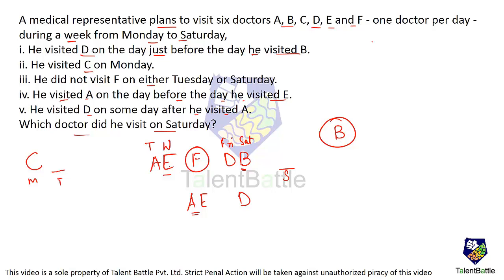F cannot be on Tuesday, so F can only be placed between this pair and this pair. The final schedule is: C on Monday, A on Tuesday, E on Wednesday, F on Thursday, D on Friday, and B on Saturday.